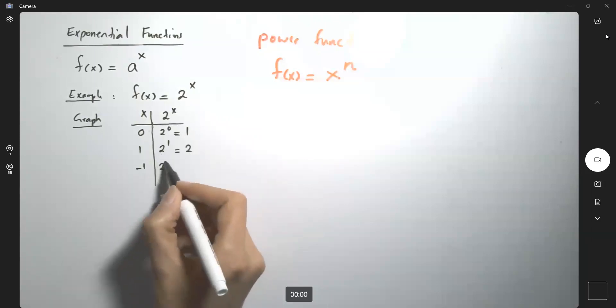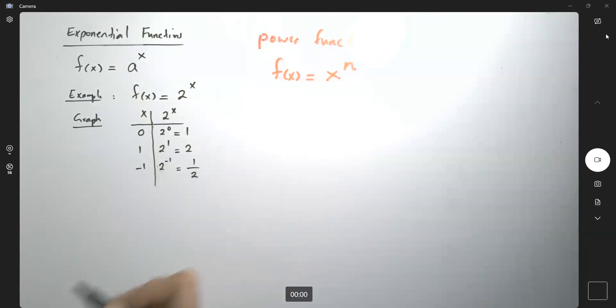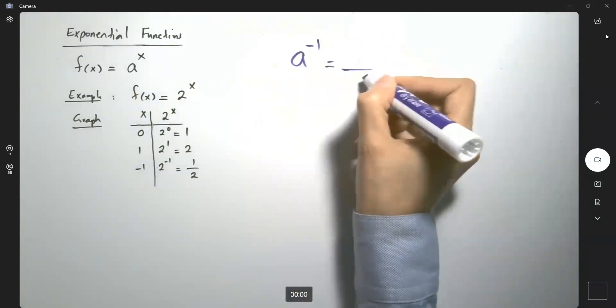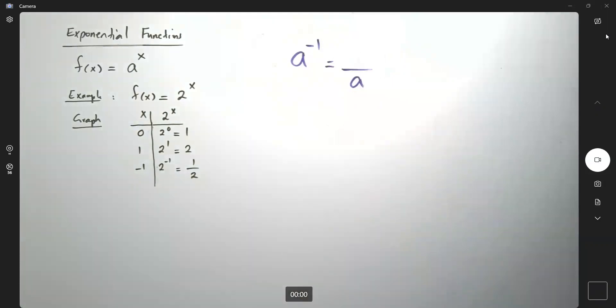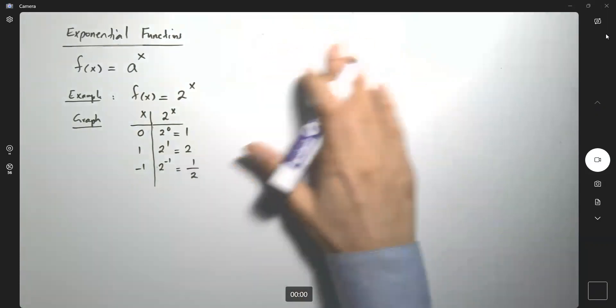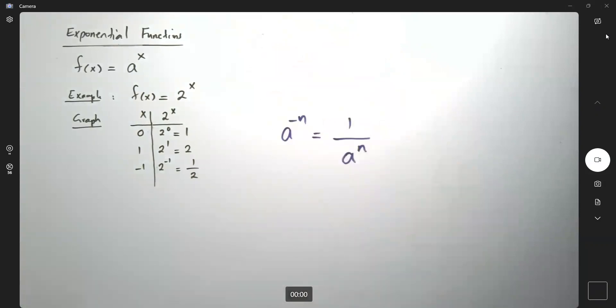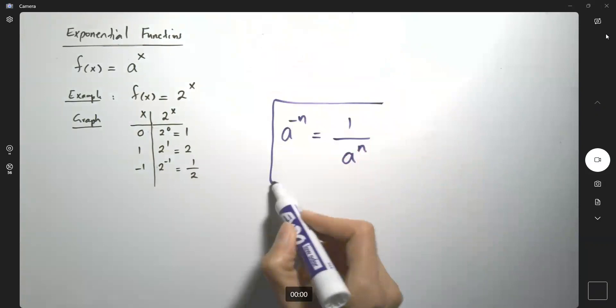You can plug in negative 1. 2^(-1) is 1/2. From algebra, as you remember, if you have a^(-n), it is 1/a^n. This is the algebra part.